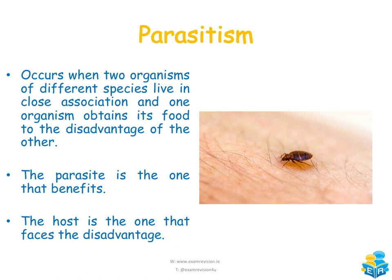Parasitism occurs when two organisms of different species live in close association and one organism — the parasite — obtains its food to the disadvantage of the other. The parasite lives on a living host, benefiting at the host's expense. The parasite always benefits, while the host faces the disadvantage.